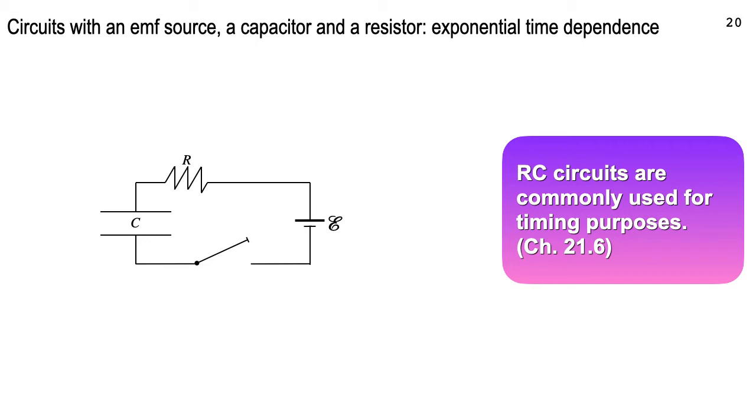As I mentioned, we started talking about how does the current change as the capacitor is loading from the battery when you flip that switch and complete the circuit. We found out that's an exponential time circuit or exponential time dependence. It's used in timing devices all over the world.